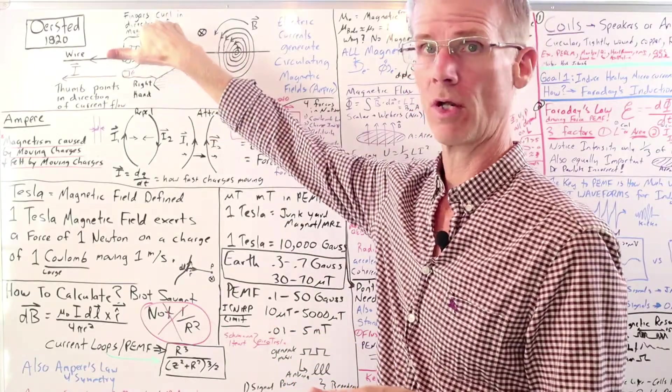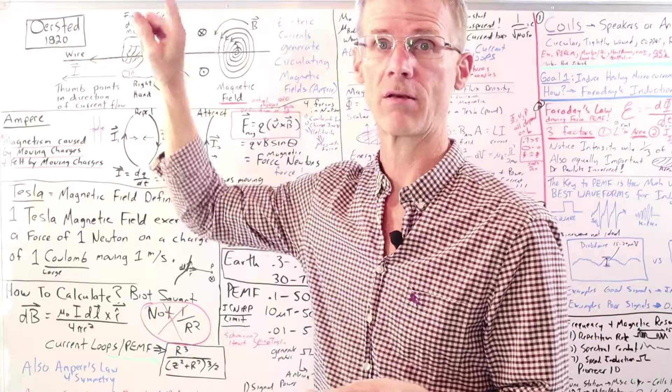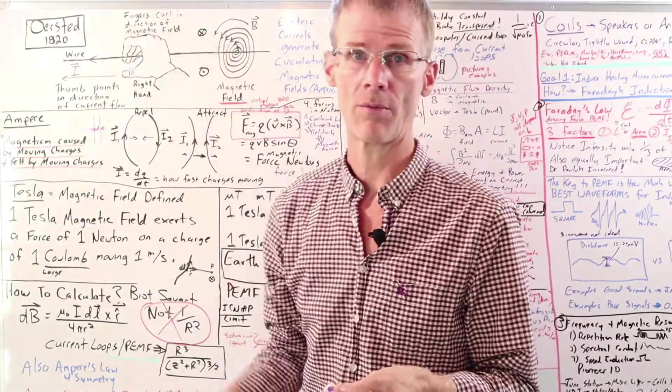We can use the right hand rule. If we put our hand around that current, your fingers curl around the wire. That's the magnetic field. So the magnetic field is literally circulating around the wire.